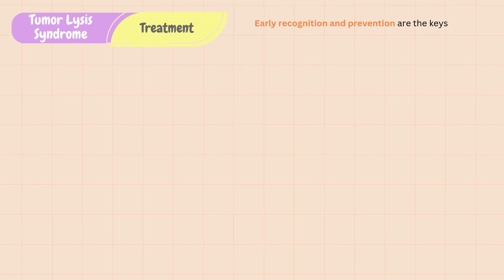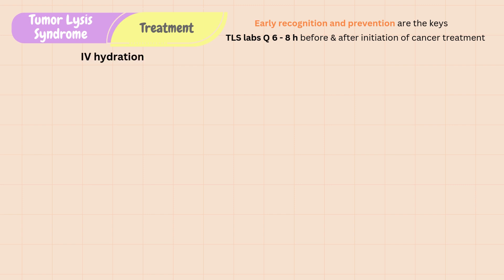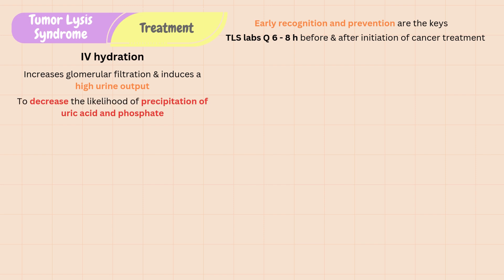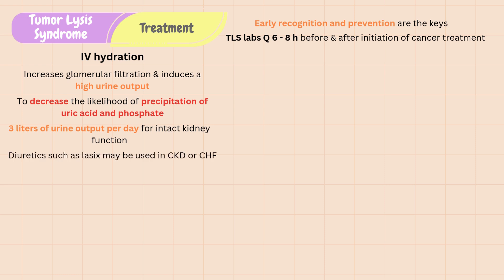Early recognition and prevention are the keys to TLS management. TLS labs such as BMP and uric acid should be monitored every 6 to 8 hours for high-risk patients before and after initiation of cancer treatment. IV hydration can be initiated to prevent and treat TLS by increasing glomerular filtration and inducing high urine output to decrease the likelihood of precipitation of uric acid and phosphate. Patients with intact kidney function should have about 3 liters of urine output per day. However, IV hydration may be contraindicated in those with CKD and CHF, and diuretics such as Lasix may be used to induce urine output instead. Nurses should be recording accurate intake and output and monitoring for fluid overload.